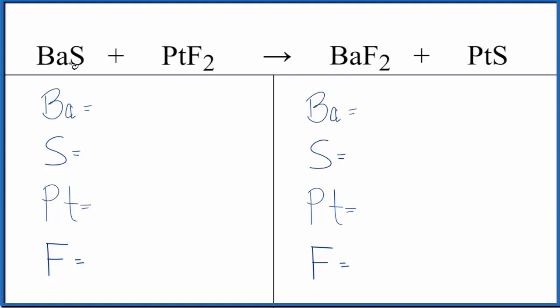One barium, one sulfur, one platinum, and two fluorine atoms on the reactant side. On the product side we have one barium, one sulfur, one platinum, and two fluorine atoms. So this equation is already balanced.